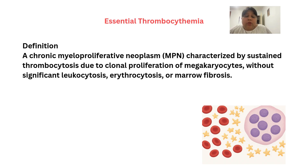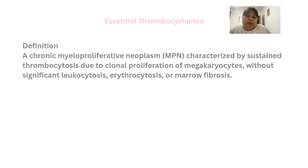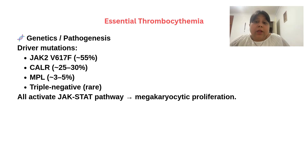Essential thrombocytemia is a chronic myeloproliferative neoplasm characterized by sustained thrombocytosis due to clonal proliferation of megakaryocytes, without significant leukocytosis, erythrocytosis, or marrow fibrosis.